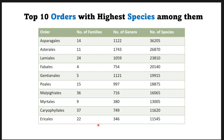Let us have a broader look at the APG4 system. The top ten orders with the highest species count are: Asparagales with 36,205 species belonging to 1,122 genera, Asterales with around 26,000 species, Lamiales with around 23,000, Fabales with around 20,000, Gentianales with around 19,000, Poales with around 18,000, Malpighiales with around 16,000, Myrtales with around 13,000, Caryophyllales with around 11,000, and Ericales with around 11,000.